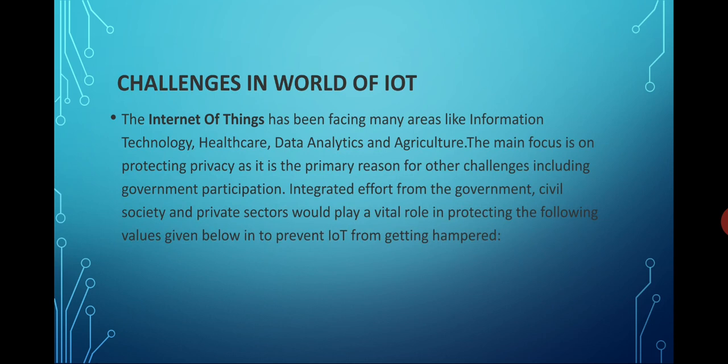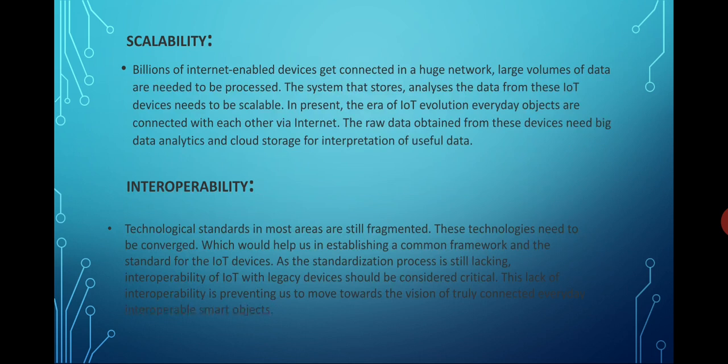The following steps can help prevent IoT devices from being hampered. First is scalability. There are over 5 billion IoT devices connected in a huge network, and therefore large volumes of data need to be processed, meaning this data needs to be scalable.